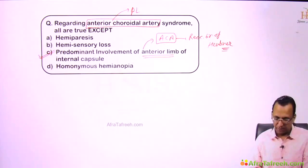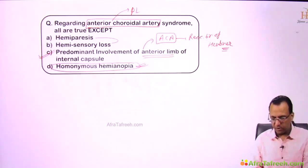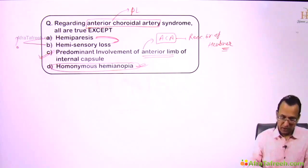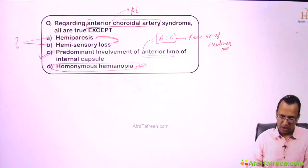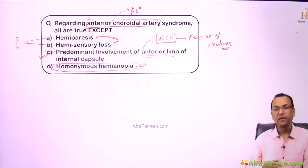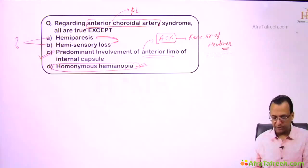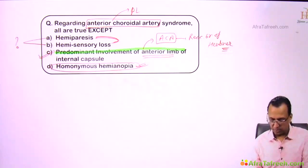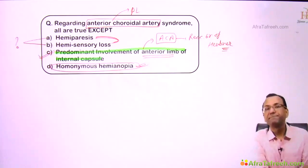There will be homonymous hemianopia and sensory motor loss restricted to the upper limb, trunk, and lower limb, not the face — because the posterior limb of the internal capsule is compromised. Keep the answer as option C and move further.